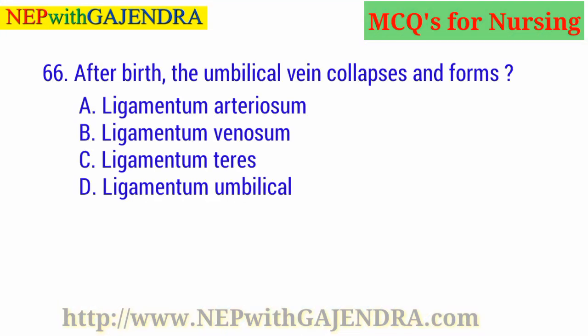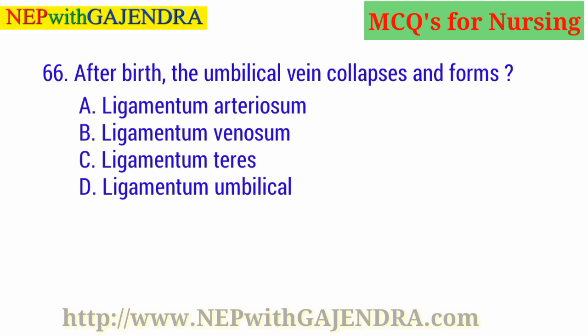After birth, the umbilical vein collapses and forms: A. Ligamentum arteriosum. B. Ligamentum venosum. C. Ligamentum teres. D. Ligamentum umbilicale. The right answer is C: Ligamentum teres.